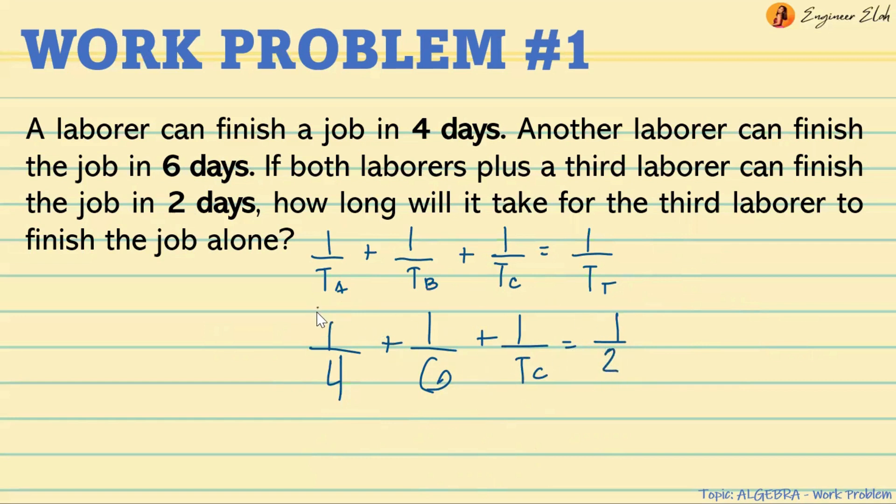We'll solve it algebraically. Get the LCM of 4, 6, and 2. That will be 12. Multiply both sides. Simplifying, that will be 3 plus 2 plus 12 over Tc equals 6. So 12 over Tc equals 6 minus 5, which is 1. And taking the reciprocal, Tc or the total time for C to finish the job alone is 12 days.